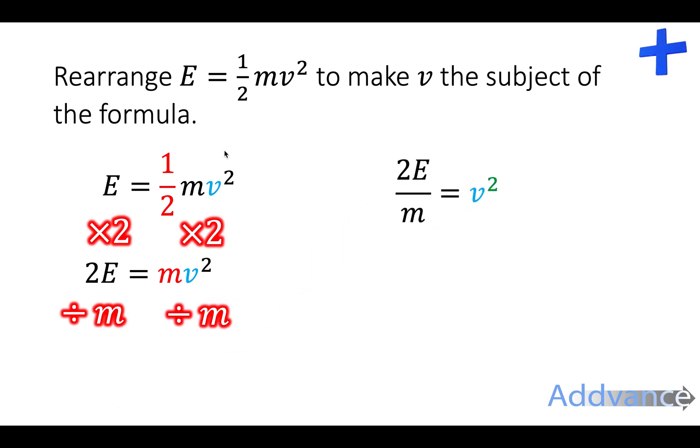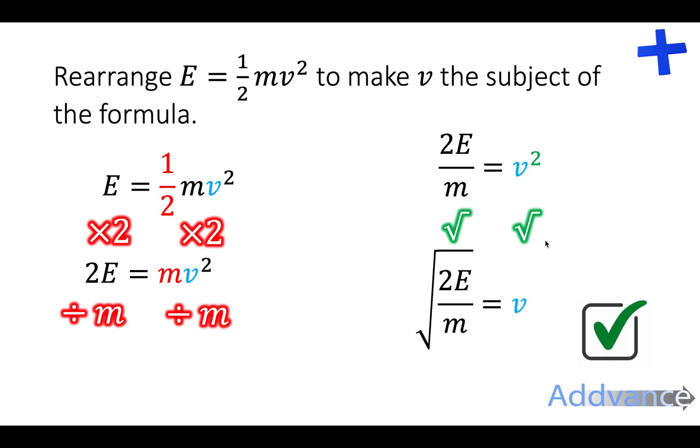We're almost there. Now we just need to get rid of the square. The opposite to squaring something is square rooting. So we square root both sides and we get this. And that's the final answer. That is the same equation but rearranged. And you would use this version to calculate v if your question asks to work out v.